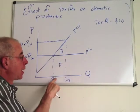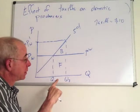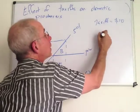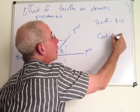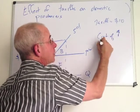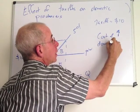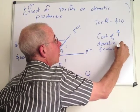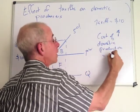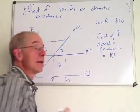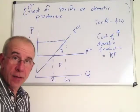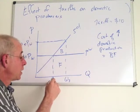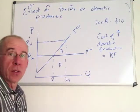Now, increased domestic production from Q1 to Q3 costs - the cost of increased domestic production is B plus F. It's the area under the supply curve. That is the increase in total variable cost associated with going from Q1 to Q3.